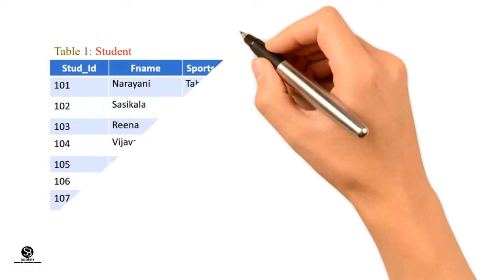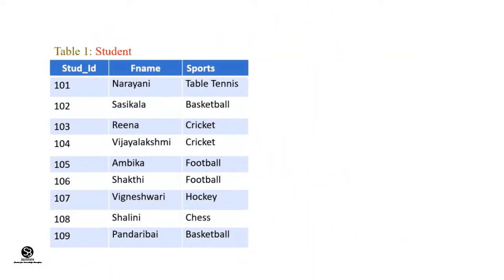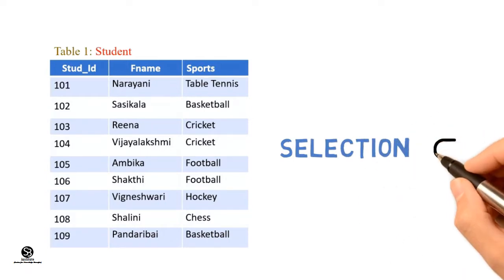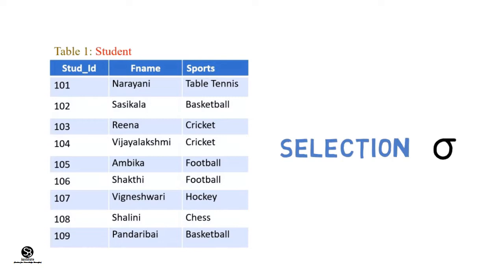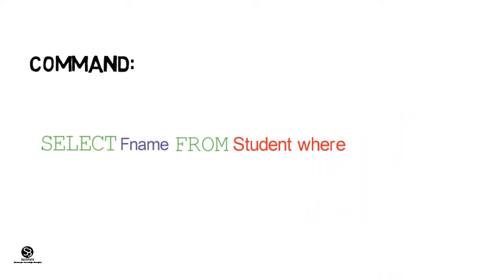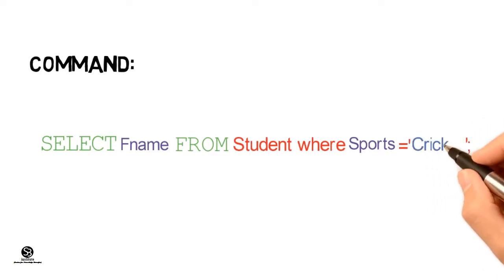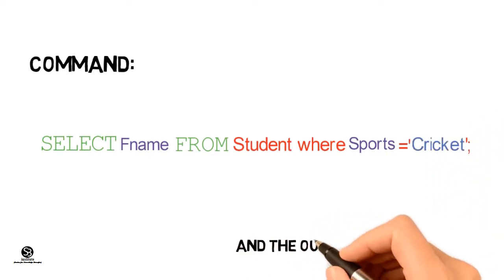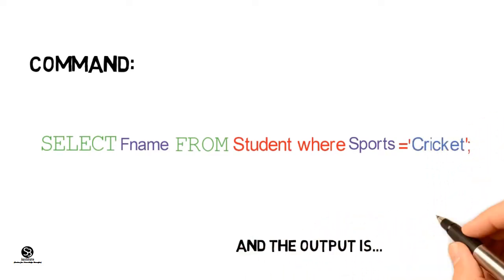The sports teacher would like to extract the list of students who play cricket from the student table. The selection operation can be implemented using an SQL command such as: SELECT FName FROM Student WHERE Sports = 'Cricket'. The output will have all the student players who play cricket.